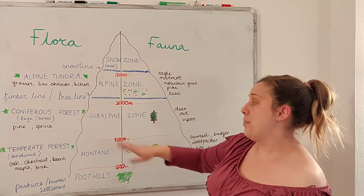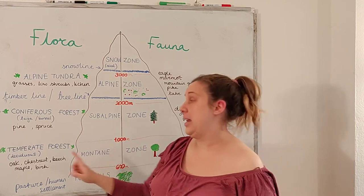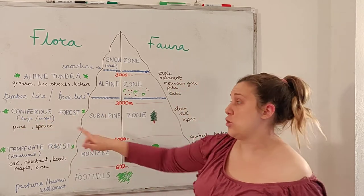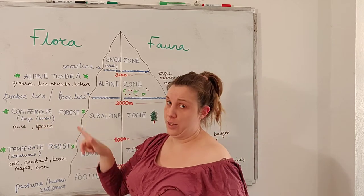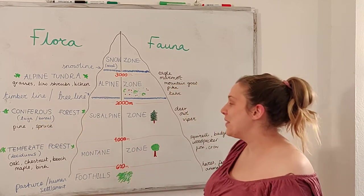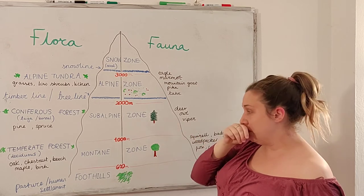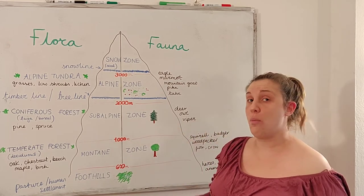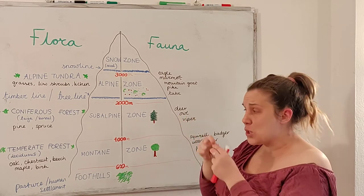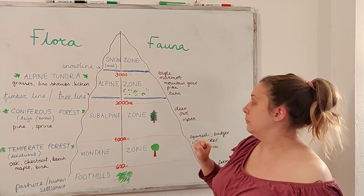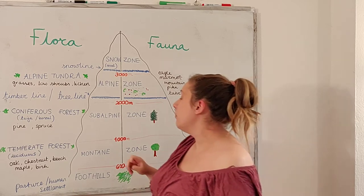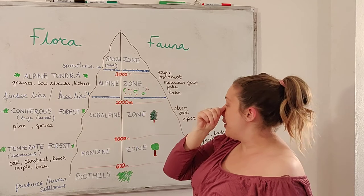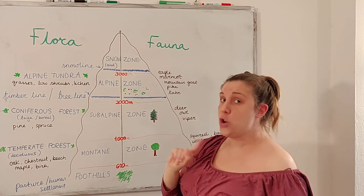The next zone up, the subalpine zone, is where you would find coniferous forest — sometimes in Eurasia called taiga or boreal forest, in case you hear those. In this zone we have trees like pine and spruce that don't drop their leaves; they have small needles rather than broad leaves. Then we have the tree line at 2000 metres, so above there, no trees.